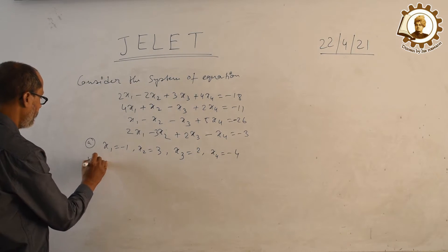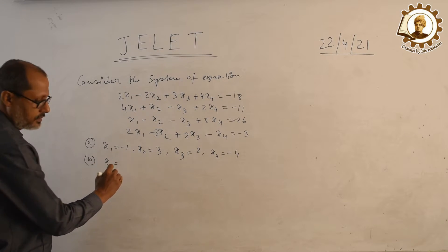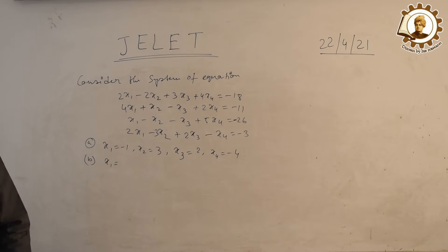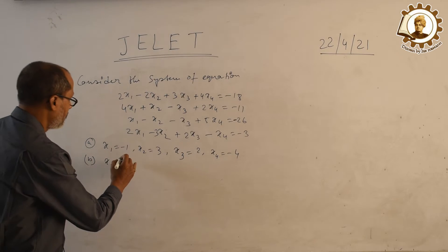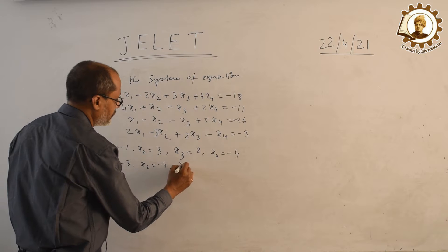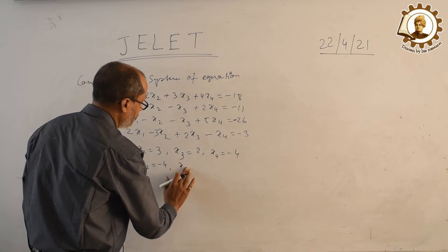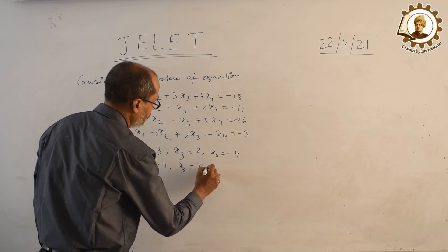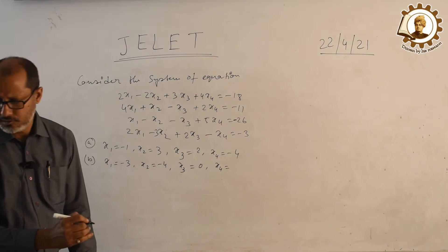Option B: x1 equals minus 3, x2 equals minus 4, x3 equals 2, x4 equals minus 1.